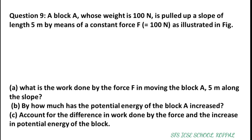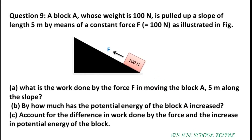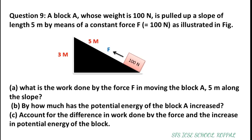Question 9. A block A weighing 100 N is pulled up a slope of length 5 m by means of a constant force F equal to 100 N, as illustrated in the figure. Part A: what is the work done by force F in moving block A 5 m along the slope? Part B: what is the increase in potential energy of the block? Part C: account for the difference in the work done by the force and the increase in potential energy of the block.